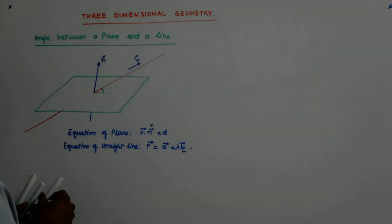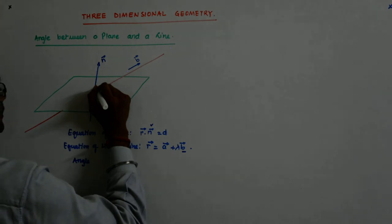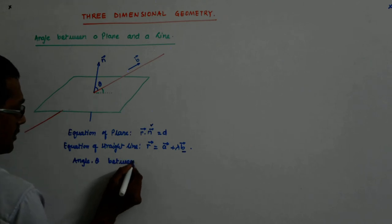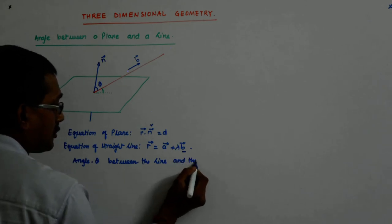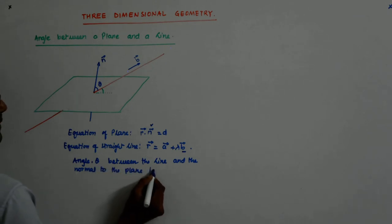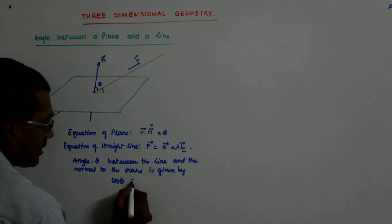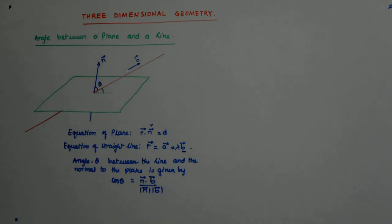So, what is the angle between the line and the normal to the plane? I name it as theta. Angle theta between the line and the normal to the plane is given by cos theta is equal to n dot b divided by mod n mod b. Correct?